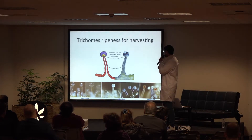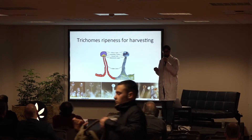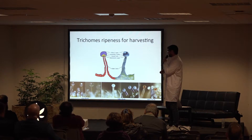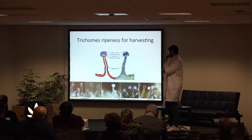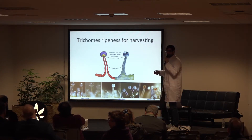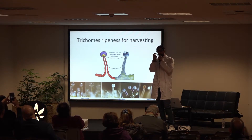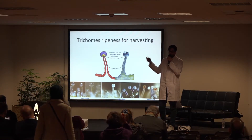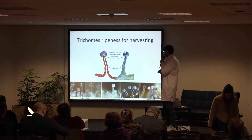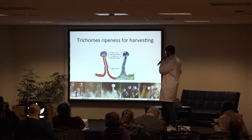When you look at the trichomes, you're looking at the bioavailability and production of secondary metabolites, meaning the appearance goes through different stages. It goes from a very clear, transparent head to a more milky head, up to an amber head. This color change is the result of plant maturation and ripeness — just like an apple or tomato becoming red as it ripens. This is very important because if you harvest at one stage, you will not get the same amount and type of cannabinoids as if you harvest at another stage.